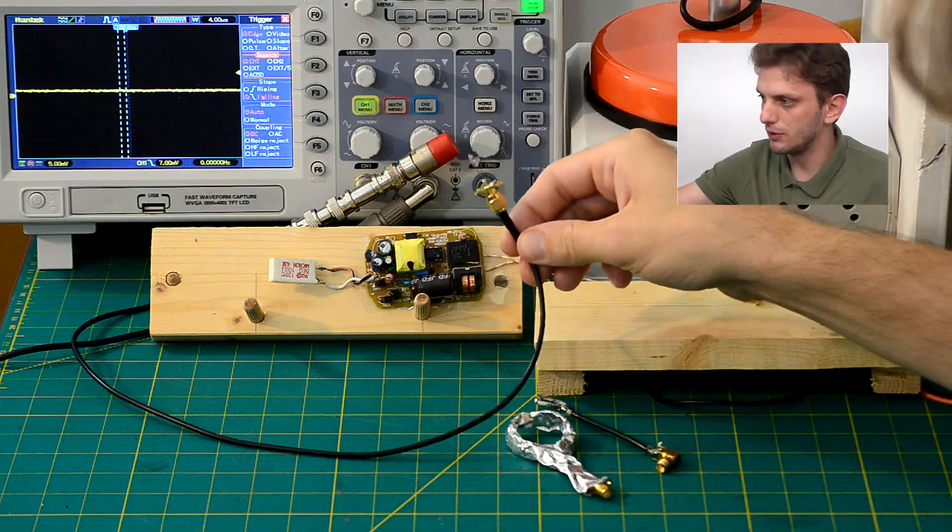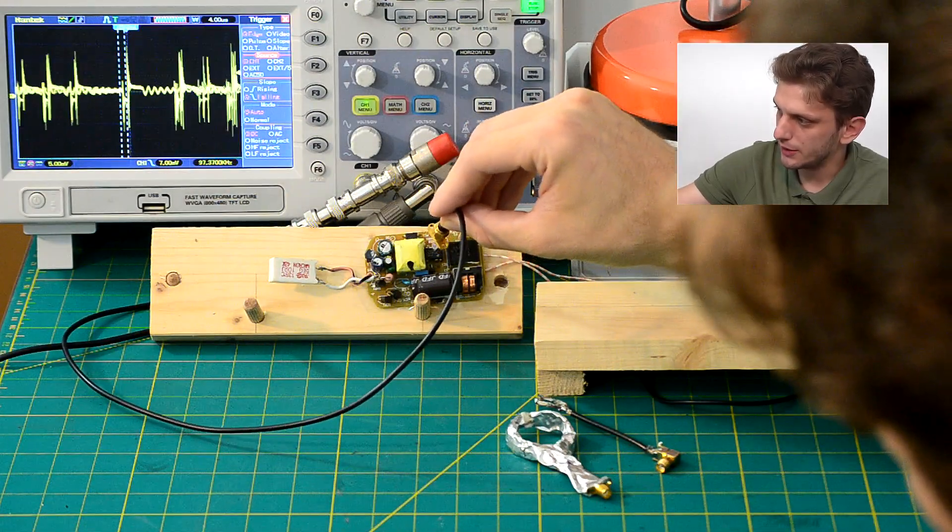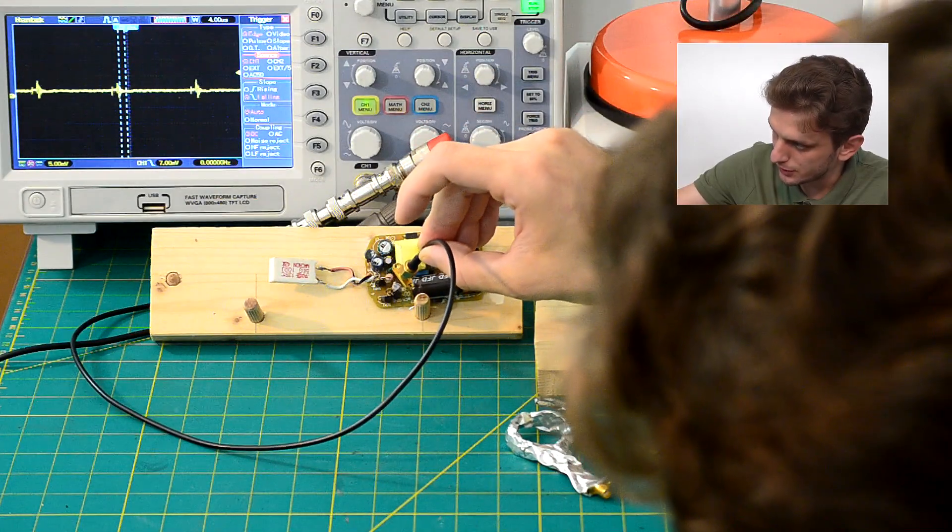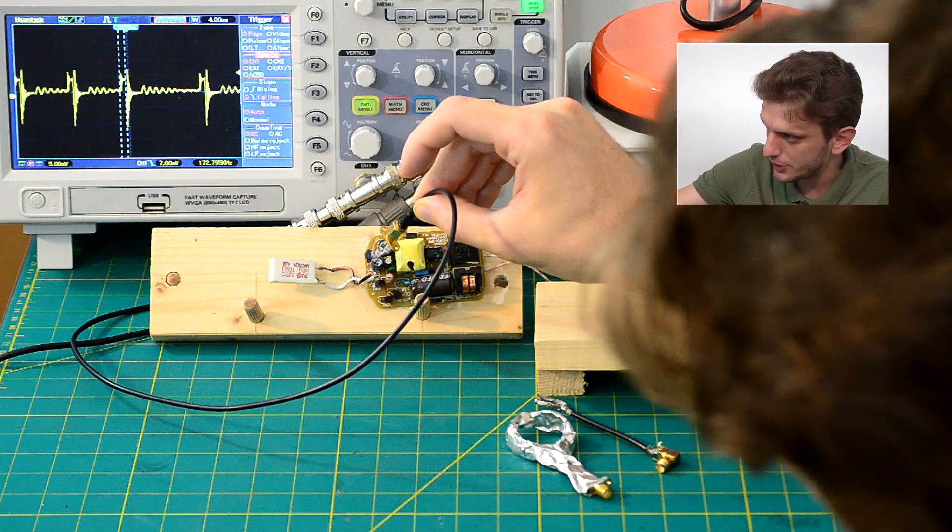Finally, we can take our tiny probe with the ferrite rod. With this probe we can actually get down close to the PCB, so because of its tiny size we can actually insert it in between components and look at individual parts here and there.